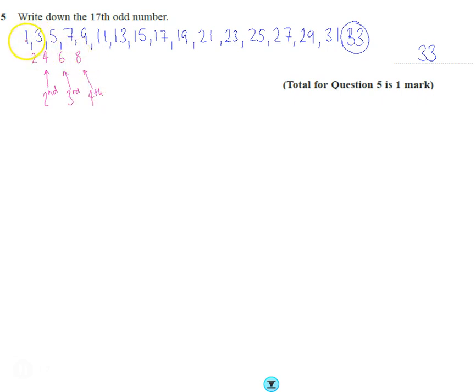So if you want the first, second, third, fourth odd number, it's basically double the number you want, the position you want, and then take off 1. If you get the fifth one, it's double 5, which is 10, that's the fifth even, and then take off 1 will give you the fifth odd.